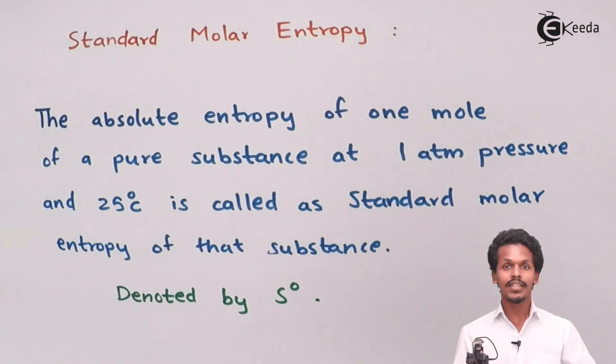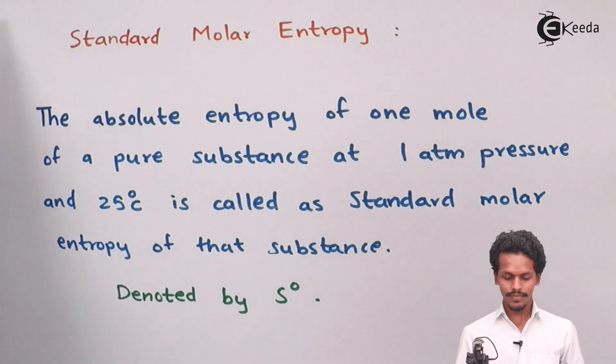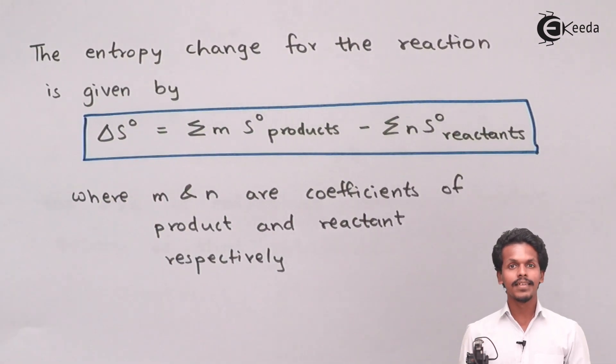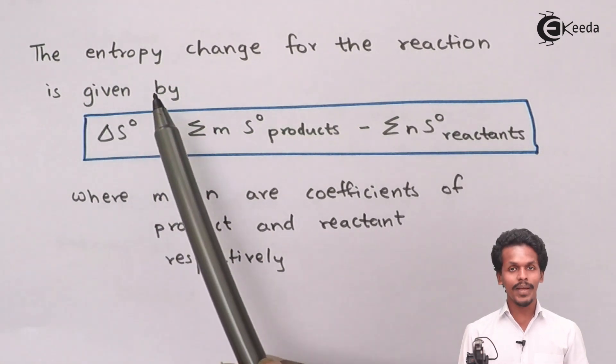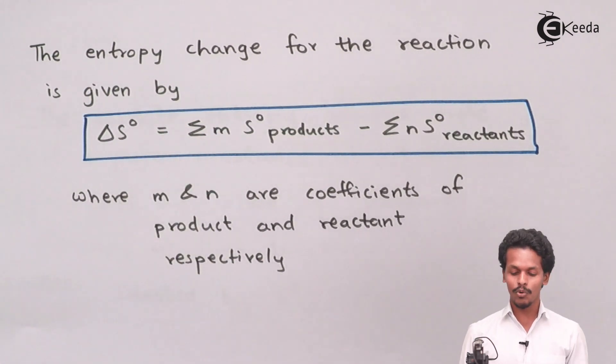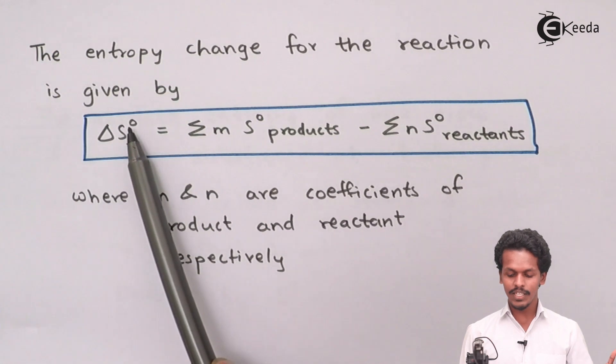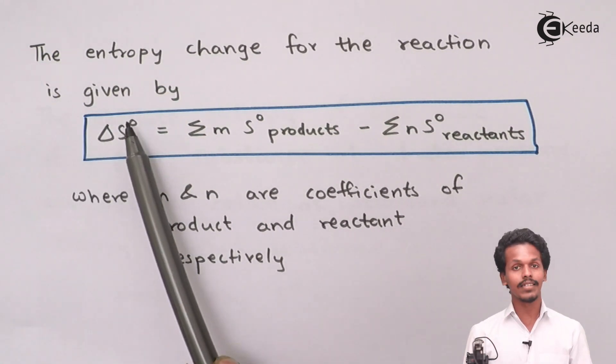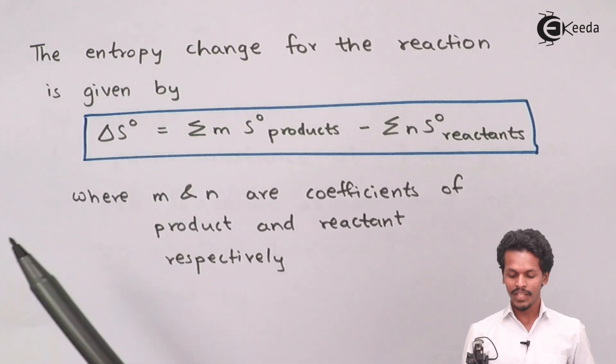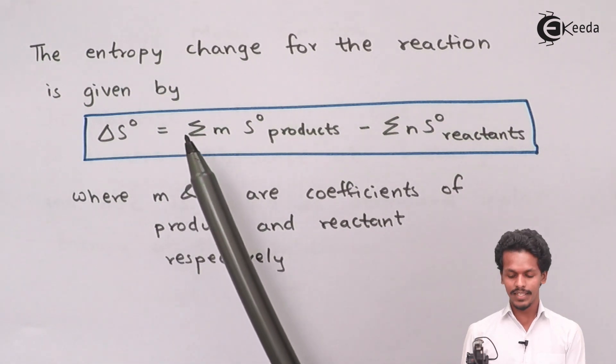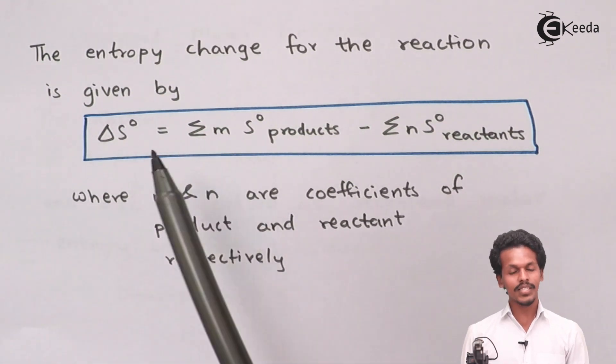The entropy change for the reaction is given by the formula: ΔS° (the change in entropy at standard value). How can we determine this? It is the summation of the number of moles of the product times the entropy of the product...